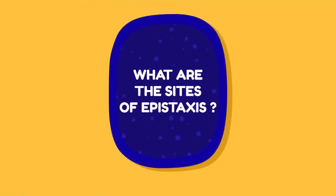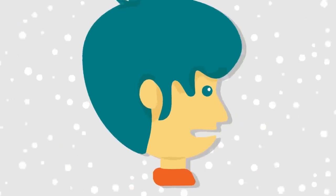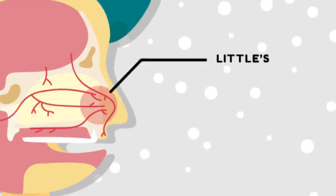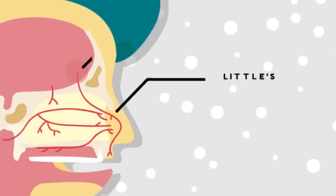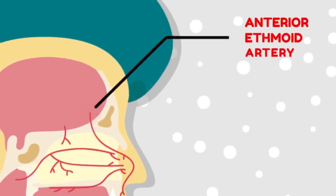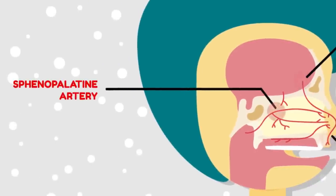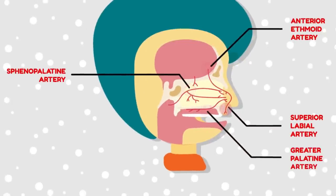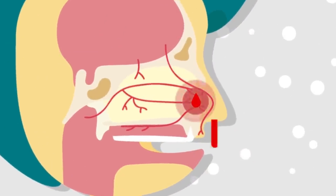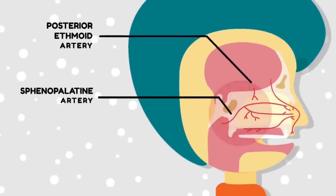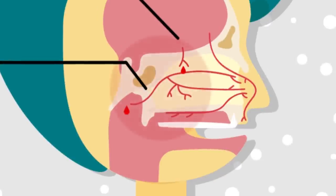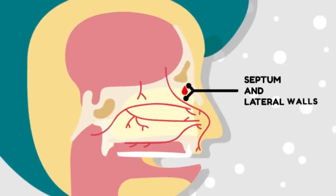Sites of epistaxis: 1. Little's area — the most important site, responsible for 90% of cases. It is situated in the antero-inferior part of the nasal septum, where four arteries anastomose: the anterior ethmoidal, septal branch of superior labial, septal branch of sphenopalatine, and the greater palatine artery. 2. Posterior part of nasal cavity — after bleeding from here, blood flows directly into the pharynx. 3. Diffuse — bleeding from the septum and lateral wall, often seen in general systemic disorders and blood dyscrasias.